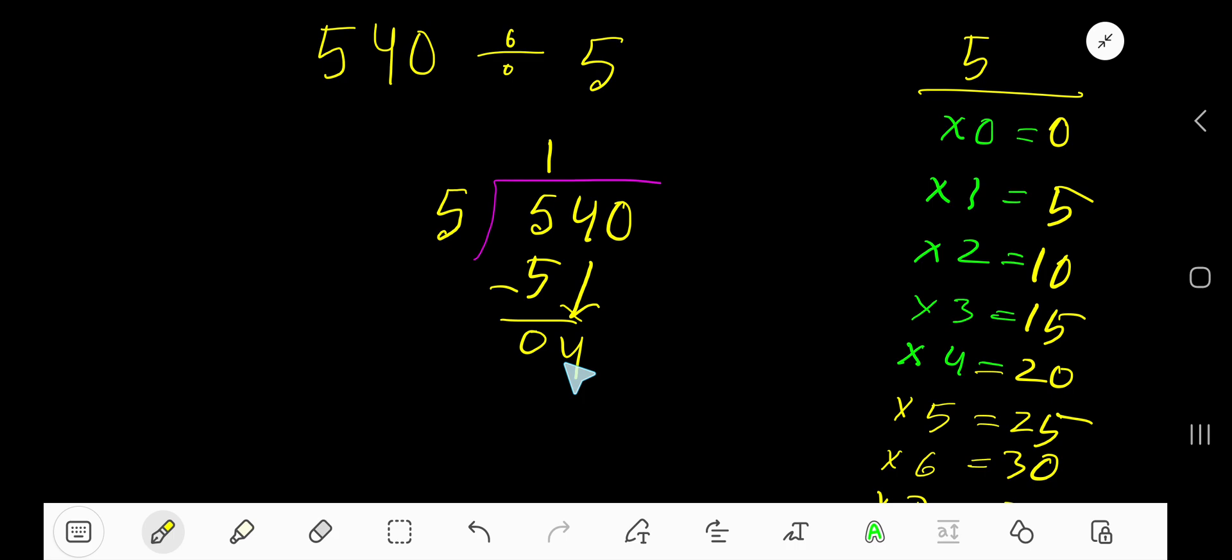Bring down this 4. Now 5 goes into 4 how many times? 4 is less than 5, so 0 times. 0 times 5 is 0, subtract, 4. Bring down this 0, this is 40. 5 goes into 40 how many times?